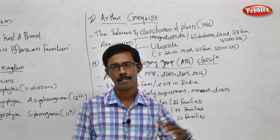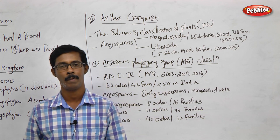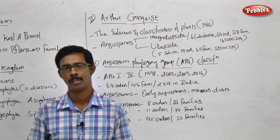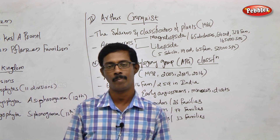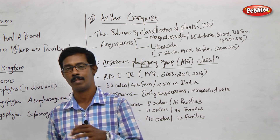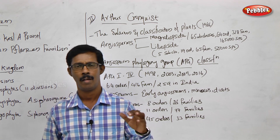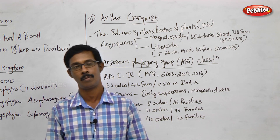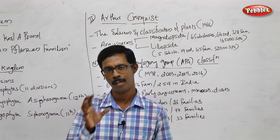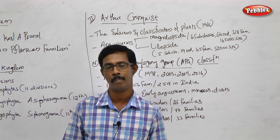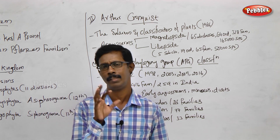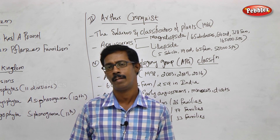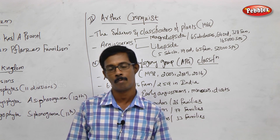We are looking at the types of classification. What do we see in the artificial system? What do we follow in the lineage? What is advantageous? From the natural system, Bentham and Hooker elaborated on the advantages. There is a major demerit, and we will include the phylogenetic analysis character in the first chapter.